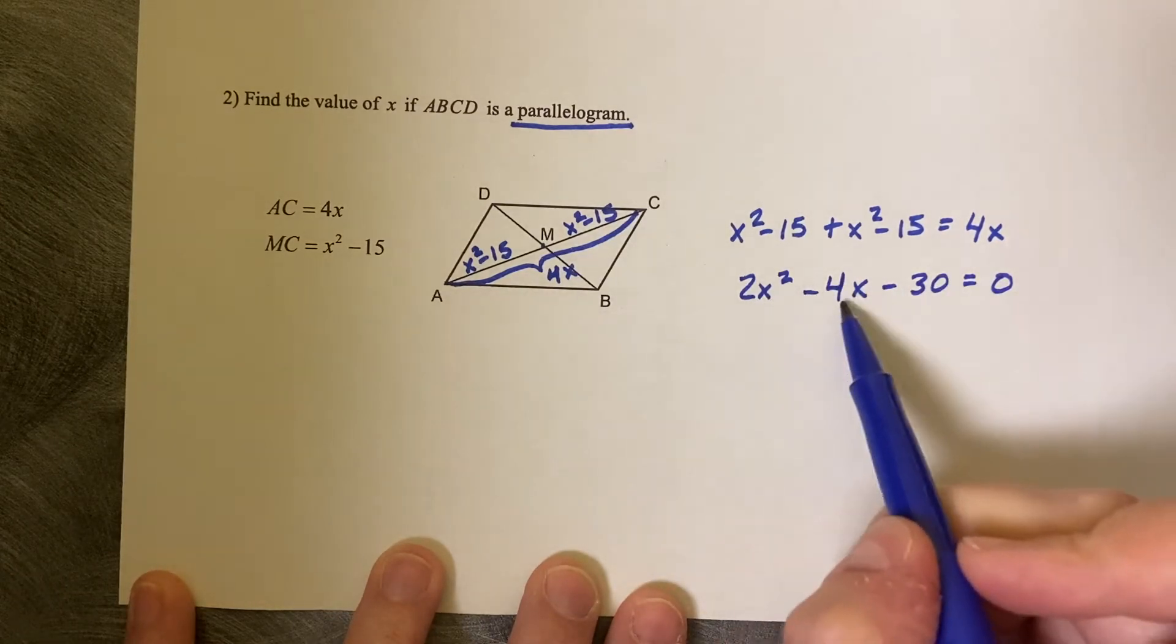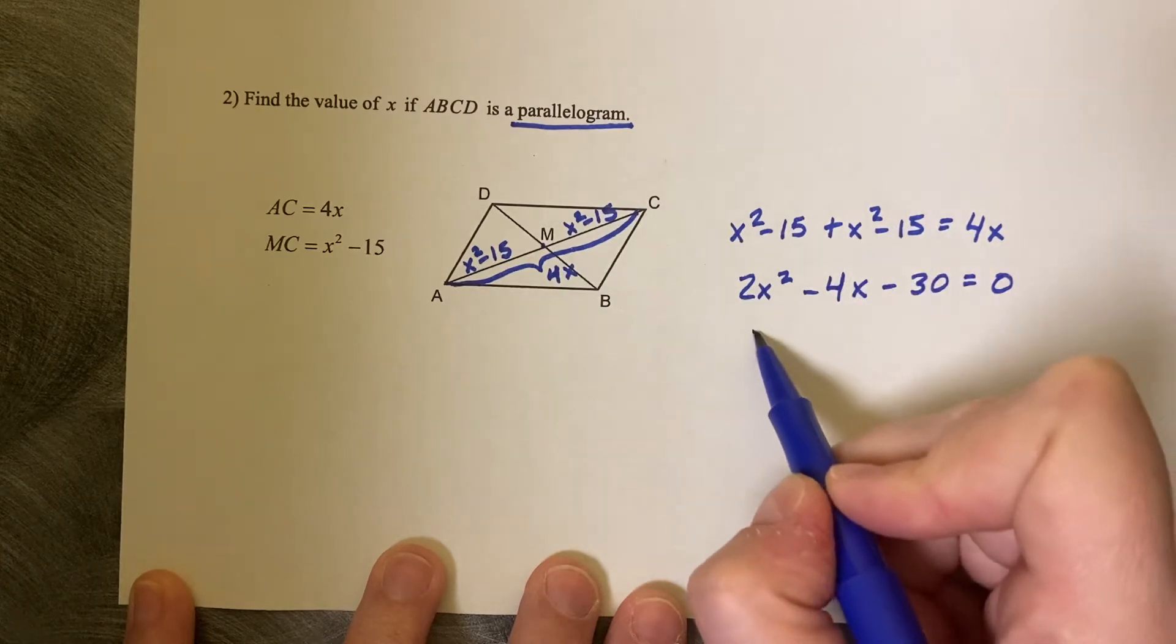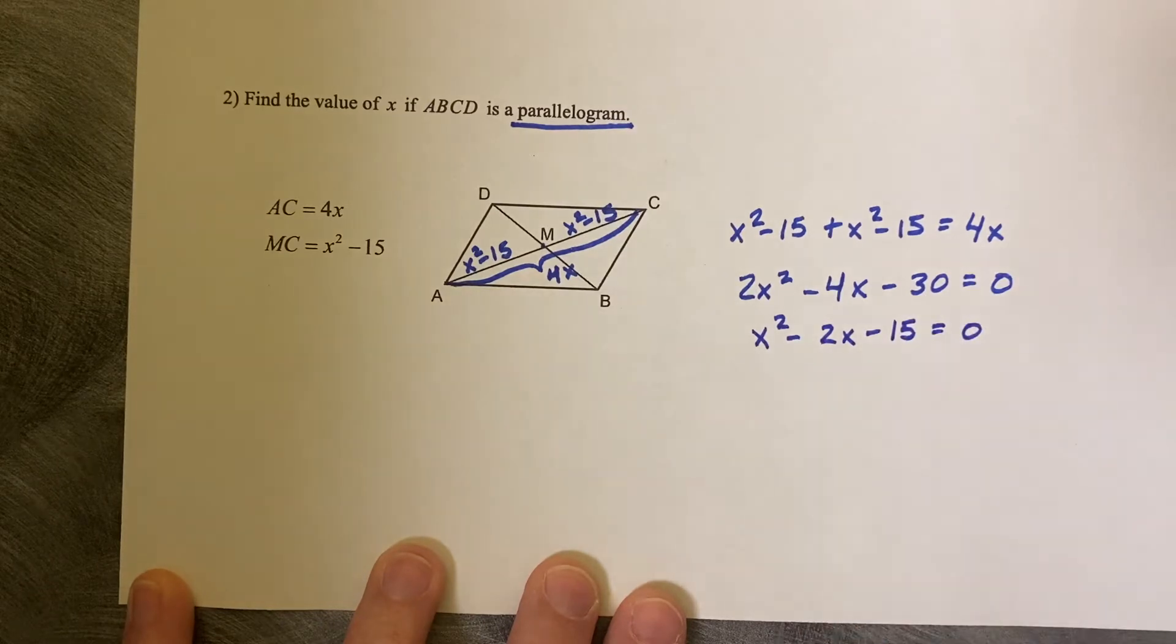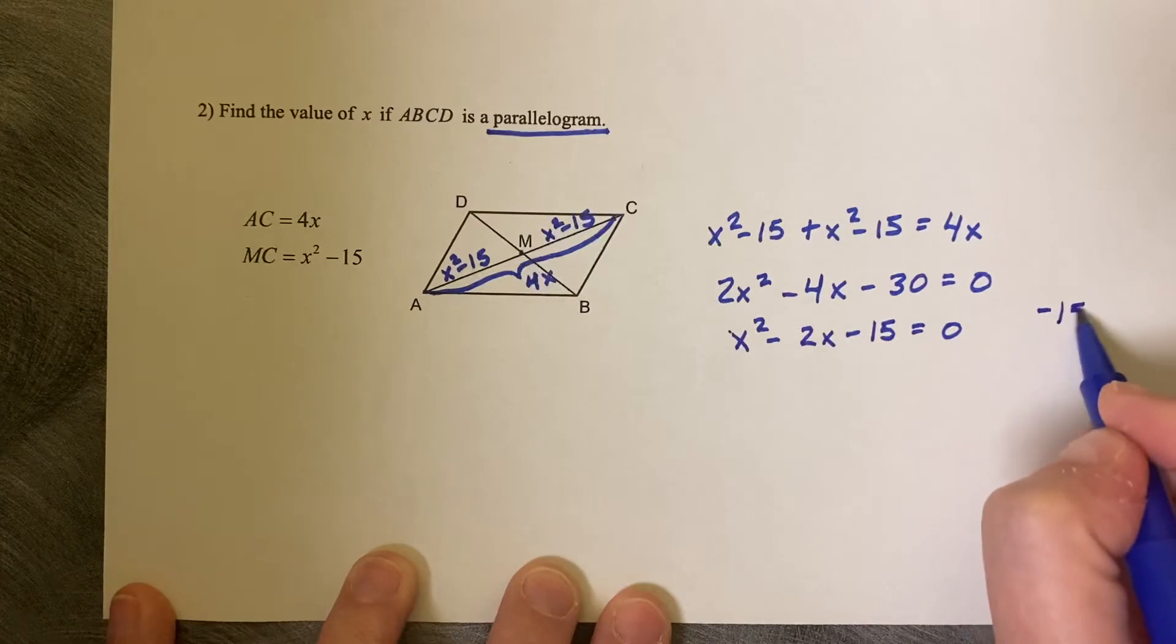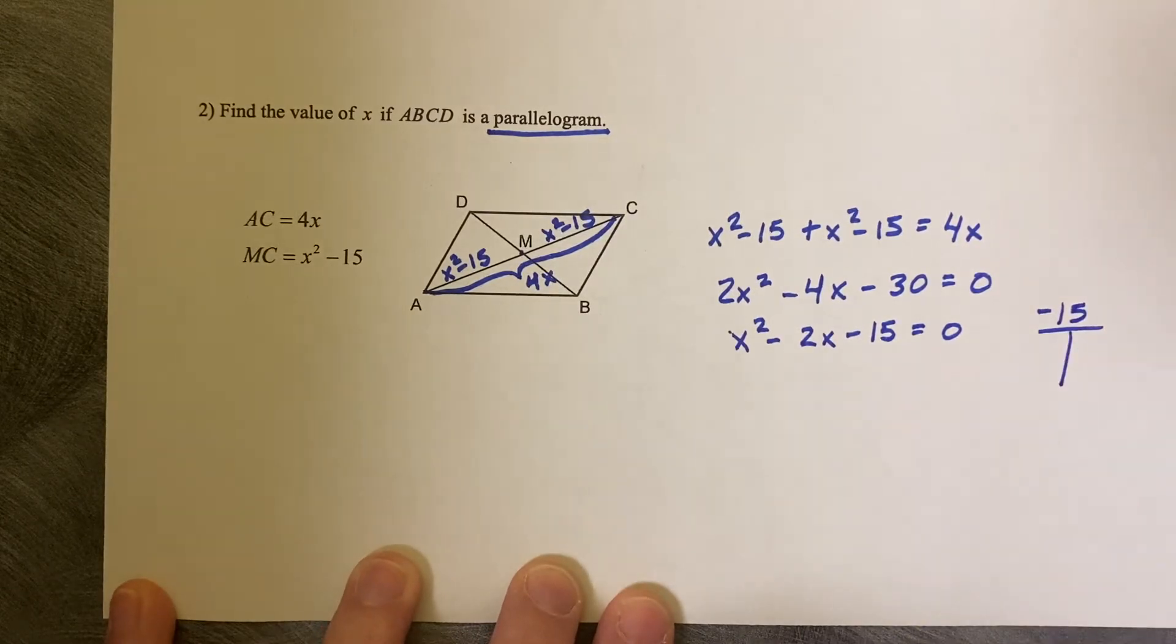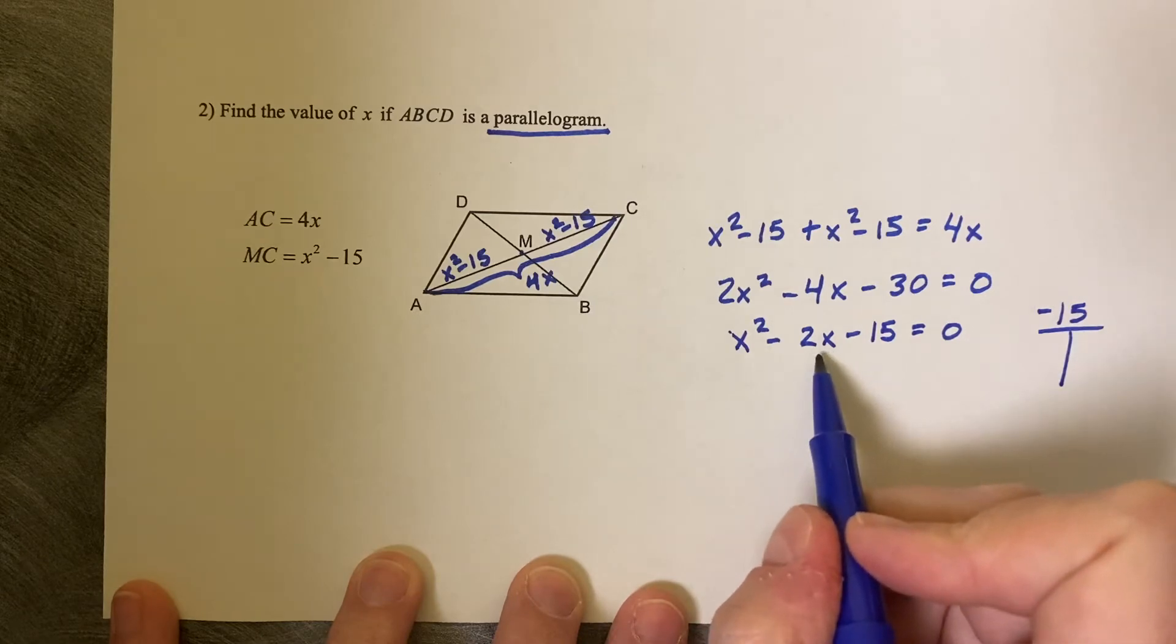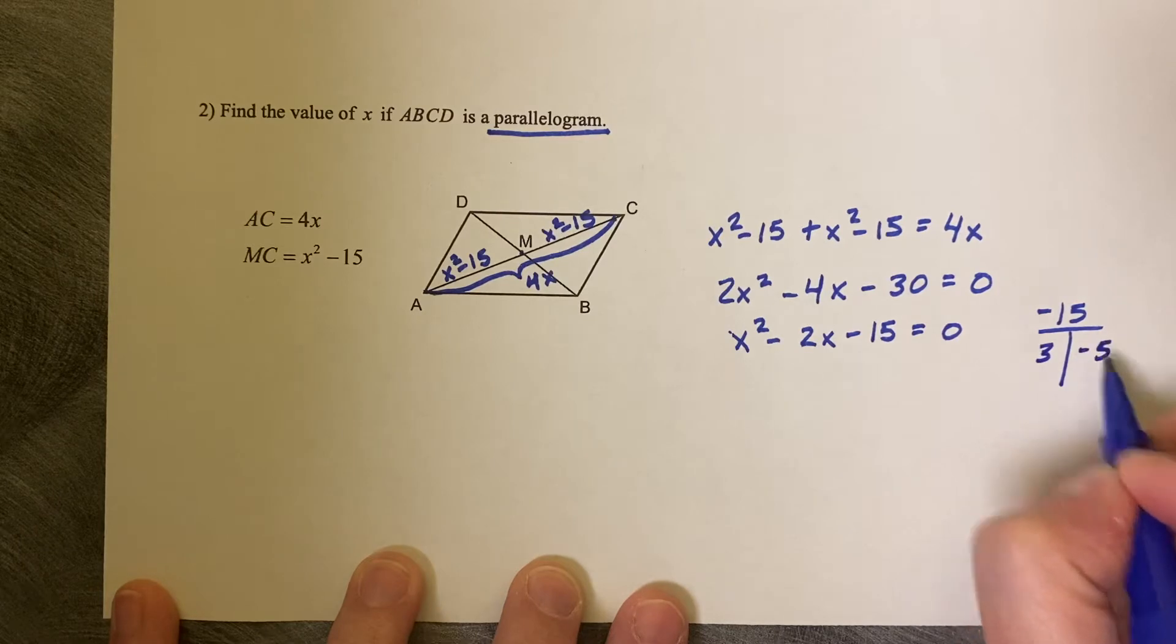I also noticed that each of these terms divides by two, so let's divide by two to make our lives easier. X squared minus 2X minus 15 equals zero. A times C is negative 15, and the two factors that multiply to negative 15 but add to negative 2 are going to be a 3 and negative 5.